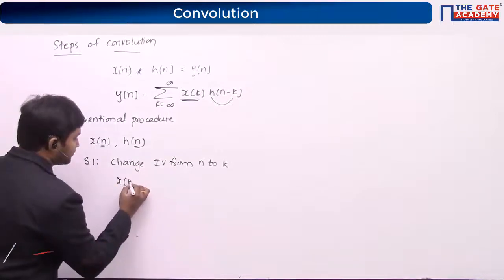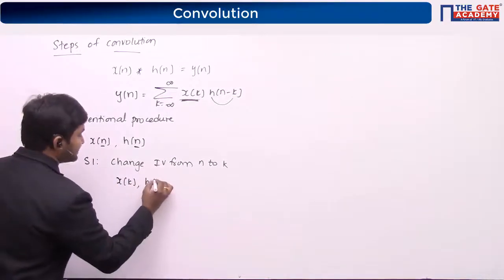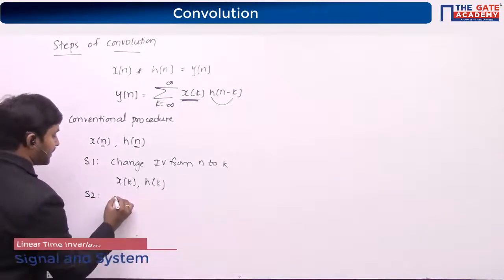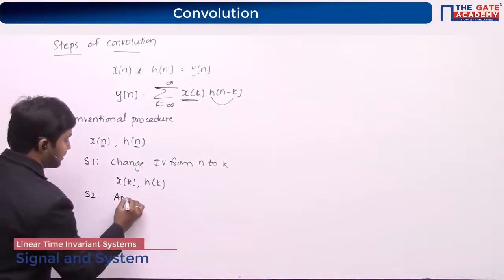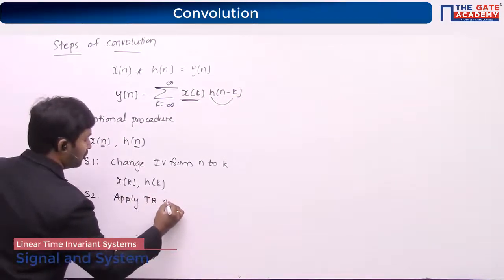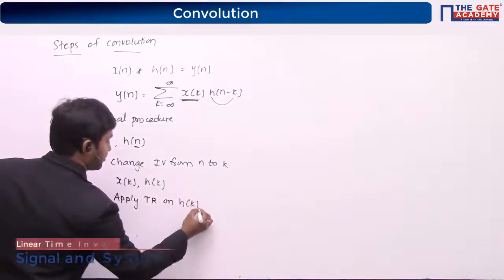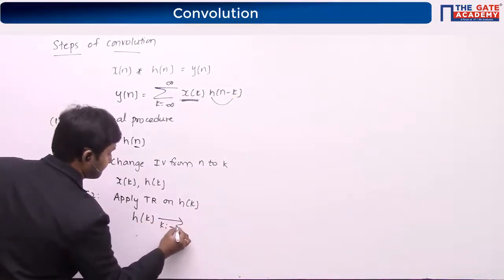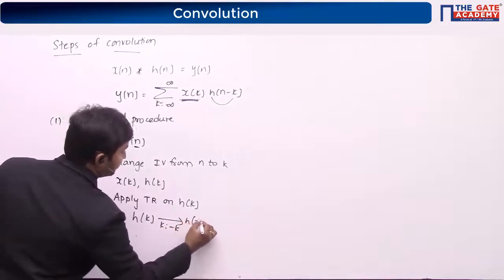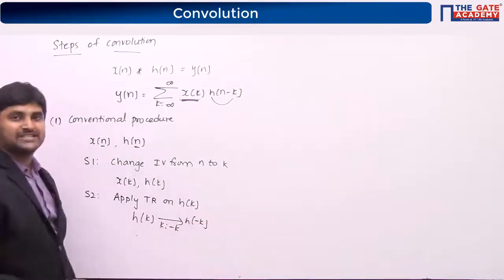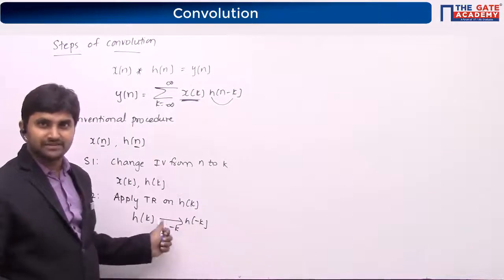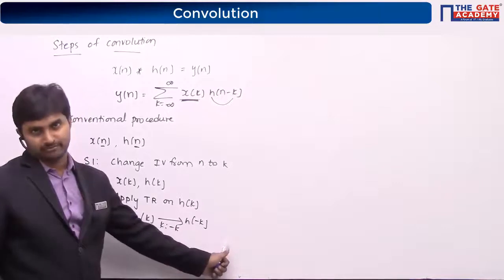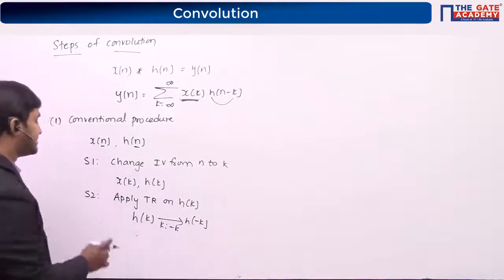So now we are having the input as x of k and h of k. The second step is to apply time reversal on h of k. If I apply the time reversal, then this becomes h of minus k. On h of k, if you apply time reversal, it becomes h of minus k. This is the second step.